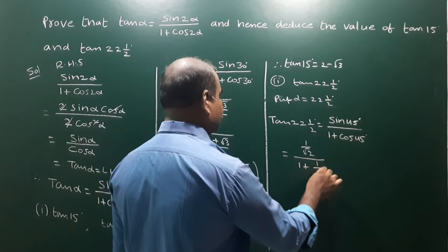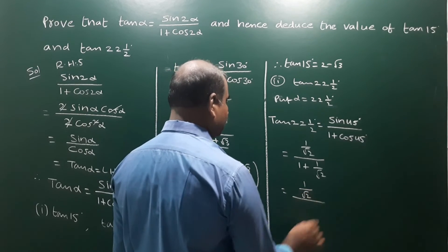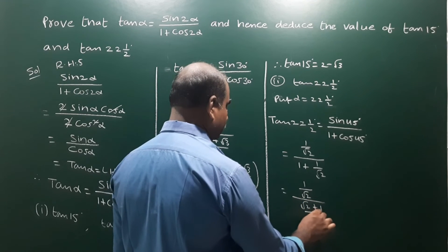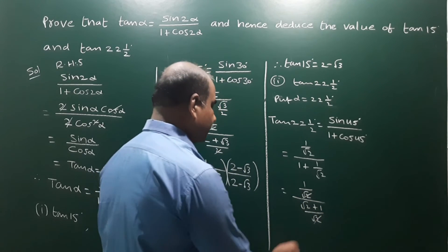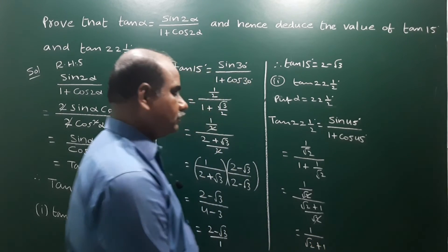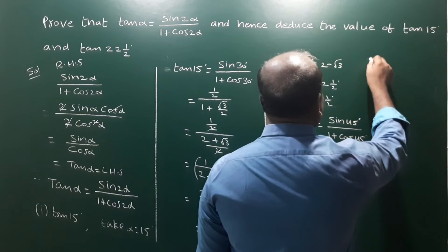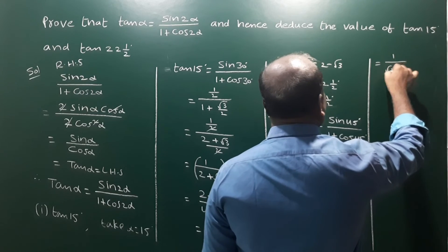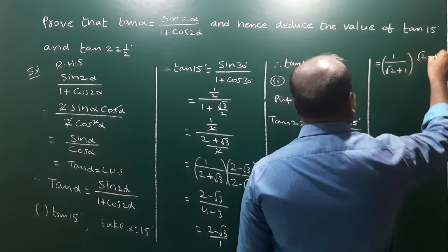Substitute the values: sin 45° = 1/√2 and cos 45° = 1/√2. So we get (1/√2) / (1 + 1/√2). Taking LCM, the denominator becomes (√2 + 1)/√2. Cancelling √2, the expression simplifies to 1/(√2 + 1).